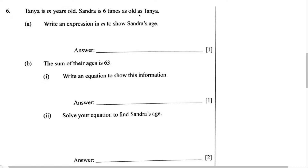Do not get confused because they used a variable instead of a number. We must read this question and try to understand what it is saying. For part A, it says write an expression in M to show Sandra's age. Tanya is M years old, so we know Tanya is going to be M years old. Therefore, we're representing Tanya's age with a variable, and that variable is M.